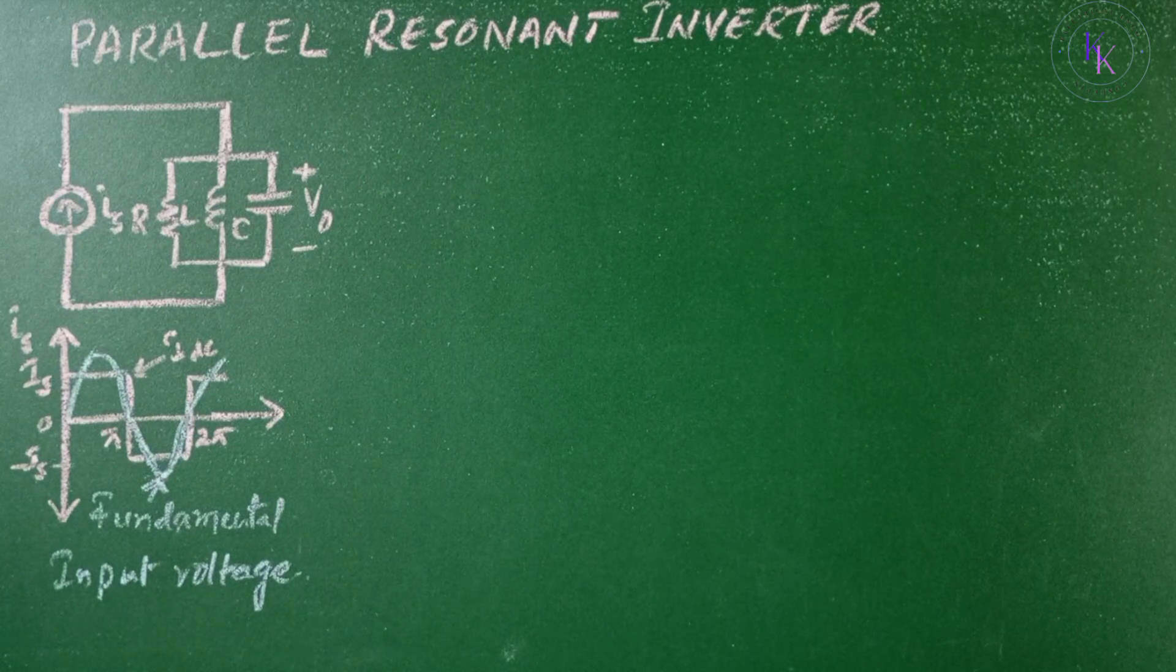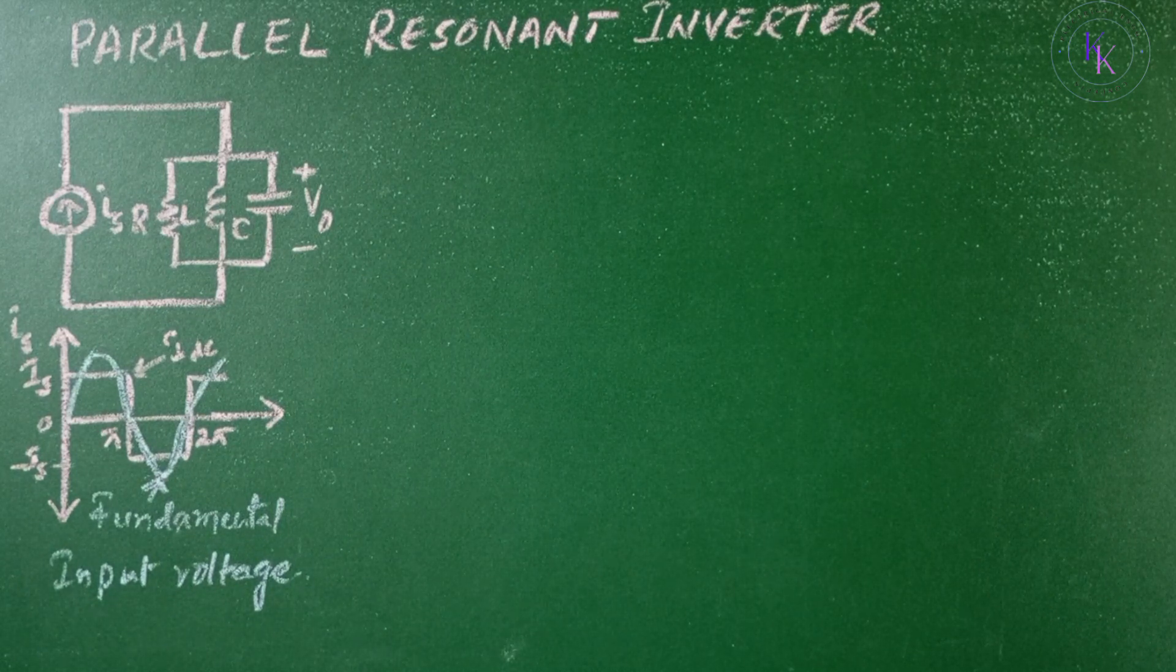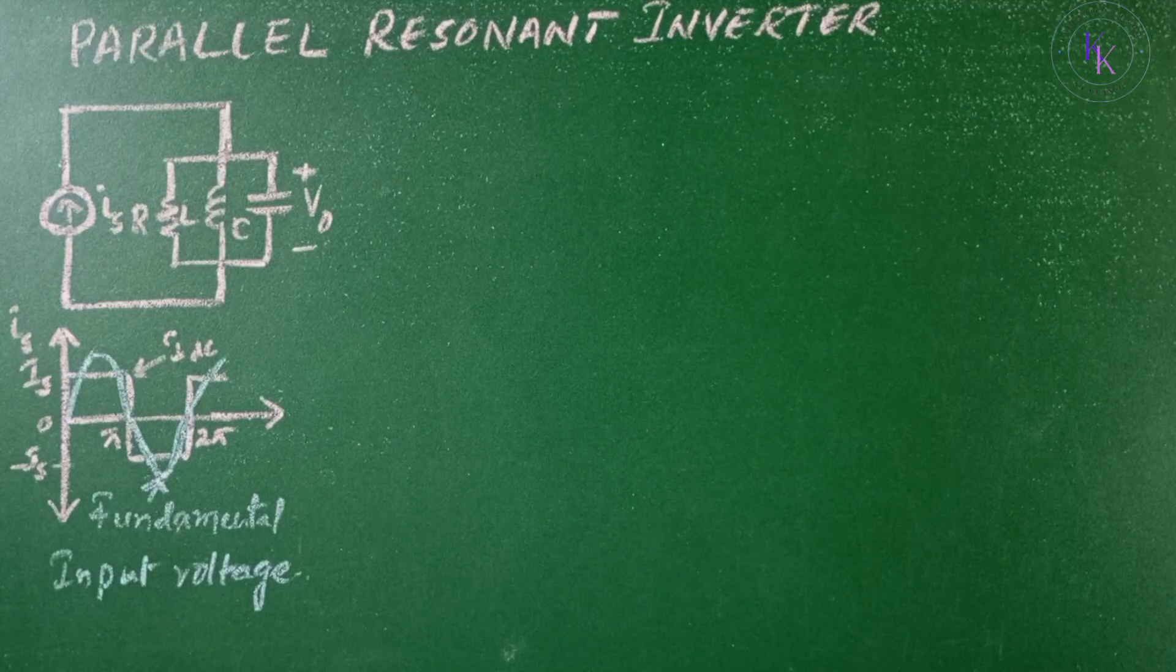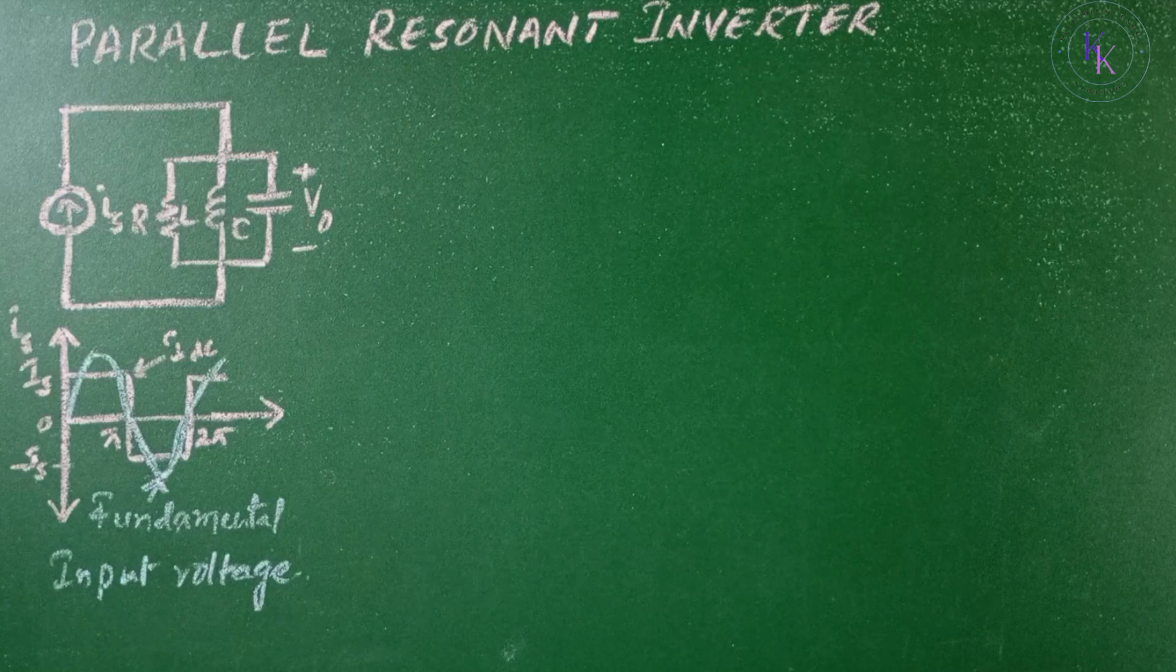Parallel resonant inverters. A parallel resonant inverter is the dual of a series resonant inverter. It is supplied from a current source so that the current offers high impedance to the switching currents.